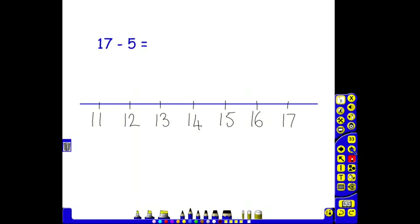Number lines can be used in several ways with subtraction. We've got 17 take away 5, and because there is a big difference between 5 and 17, instead of counting forward to look for the difference, this would be a counting back question. So the children would start at 17, this is their starting number. They need to take away 5, so they would do five jumps.